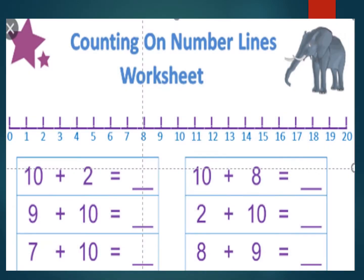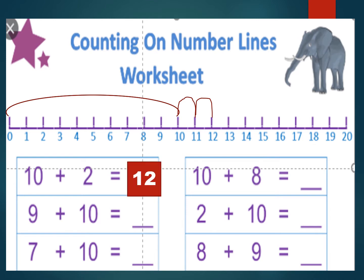Let's learn how to add on number lines. Suppose we have to add ten and two on a number line. We will first draw a line from zero to ten and then take two hops to the right. In the first hop, we reach from ten to eleven. In the second hop, we reach from eleven to twelve. So the sum is twelve. Ten plus two is equal to twelve. You can do other questions on the number line in the same way.